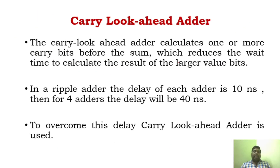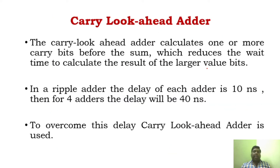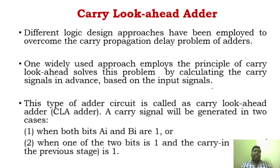Even in carry look-ahead adder, you will be using full adders. For a full adder you have three inputs — two data inputs and one carry in — and it produces carry out and sum. If we take a four-bit ripple carry adder where one adder produces output with a delay of 10 nanoseconds, then with four adders the total delay will be 40 nanoseconds. To overcome that, we are going for the carry look-ahead adder, which uses a different logic.